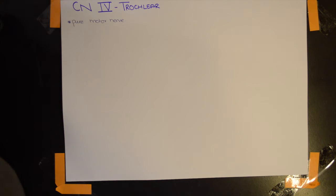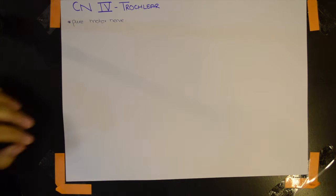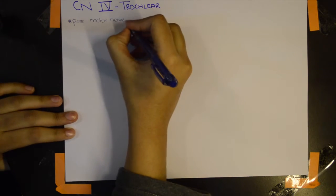Now we're going to do the fourth cranial nerve, which is the trochlear nerve. About this nerve, we know that it has one nucleus, which is pure motor. This is a pure motor nerve.